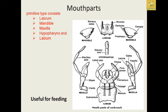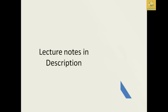The mouth parts are of a primitive type and contain five structures: labrum, mandible, maxilla, hypopharynx, and labium. These are the five important structures in the mouth of insects. The mandible is used for gripping and cutting food like scissors. The maxilla provides support to the food. The labium engulfs the food. The hypopharynx and labrum are used to cut and insert the food into the insect mouth.